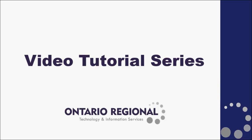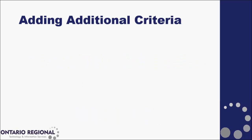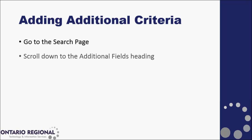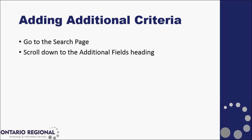Thank you for watching this video in the Matrix video tutorial series. And now for a quick lesson recap. We learned how to add criteria in this video. We start by going to the search page that we wish to use, scrolling down to the additional fields heading at the bottom of the search page, and clicking the add link beside the additional fields heading. Note that once you have added one or more fields, this link will change to an add/remove link.